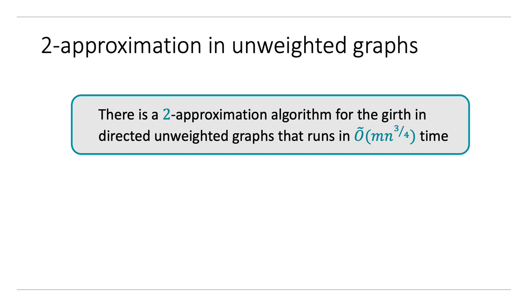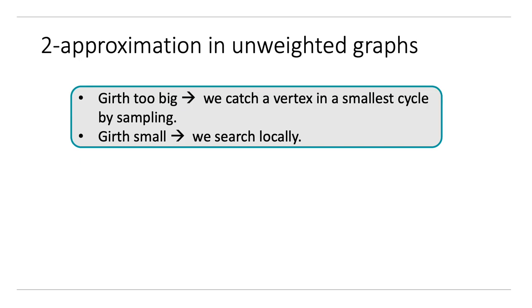We give a 2-approximation algorithm for girth in directed unweighted graphs in MN to the 3/4 time. The general idea, used in a lot of graph algorithms, is as follows: we first sample a bunch of vertices and do BFS from them. Then if the girth is too big, we catch a vertex in the smallest cycle by the sampling procedure with high probability, and so we can find this cycle through this vertex. Otherwise, if the girth is small, we search locally.